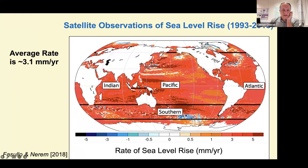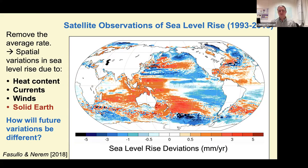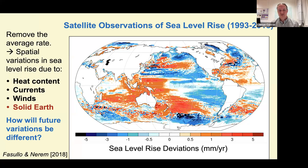Satellite information shows variations in sea level rise as a function of time over the last two and a half decades. The average rate is about three millimeters per year everywhere on Earth. If you take out that average, you can see sea level is rising faster in some areas — the western Pacific and parts of the Indian Ocean — and slower in others like the eastern Pacific. This largely reflects changes in heat content of the oceans, changes in currents and wind speeds, but also some solid earth changes.